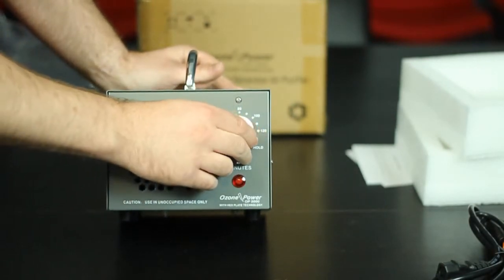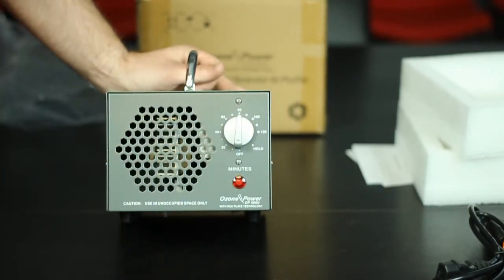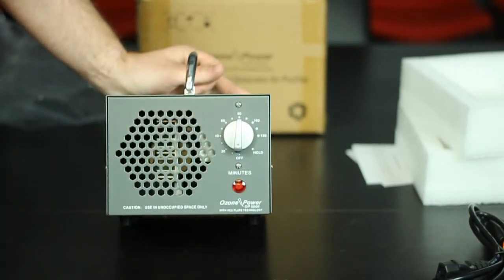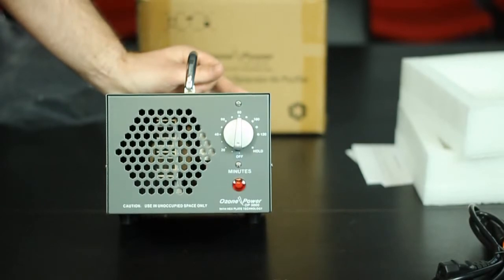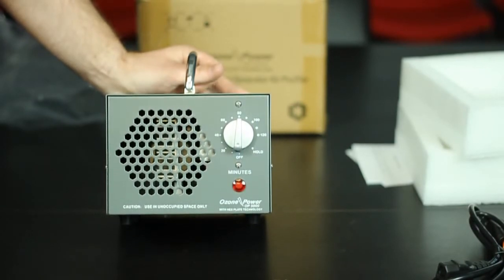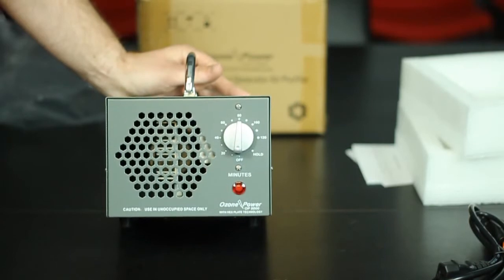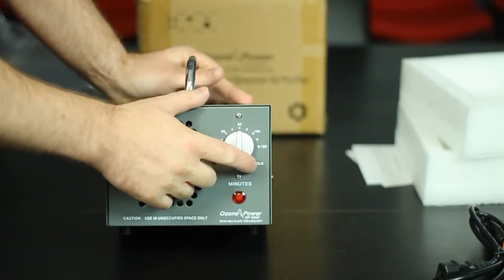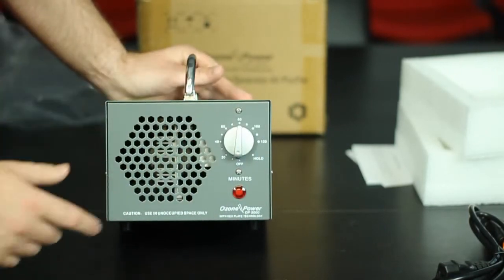That engages the hold function. You can use the hold function if you're treating a space that is exceptionally large, where a two-hour treatment is not long enough. For example, say you're treating a small warehouse or a large home, you might want to use it for three, four hours at a time versus the built-in two-hour timer.